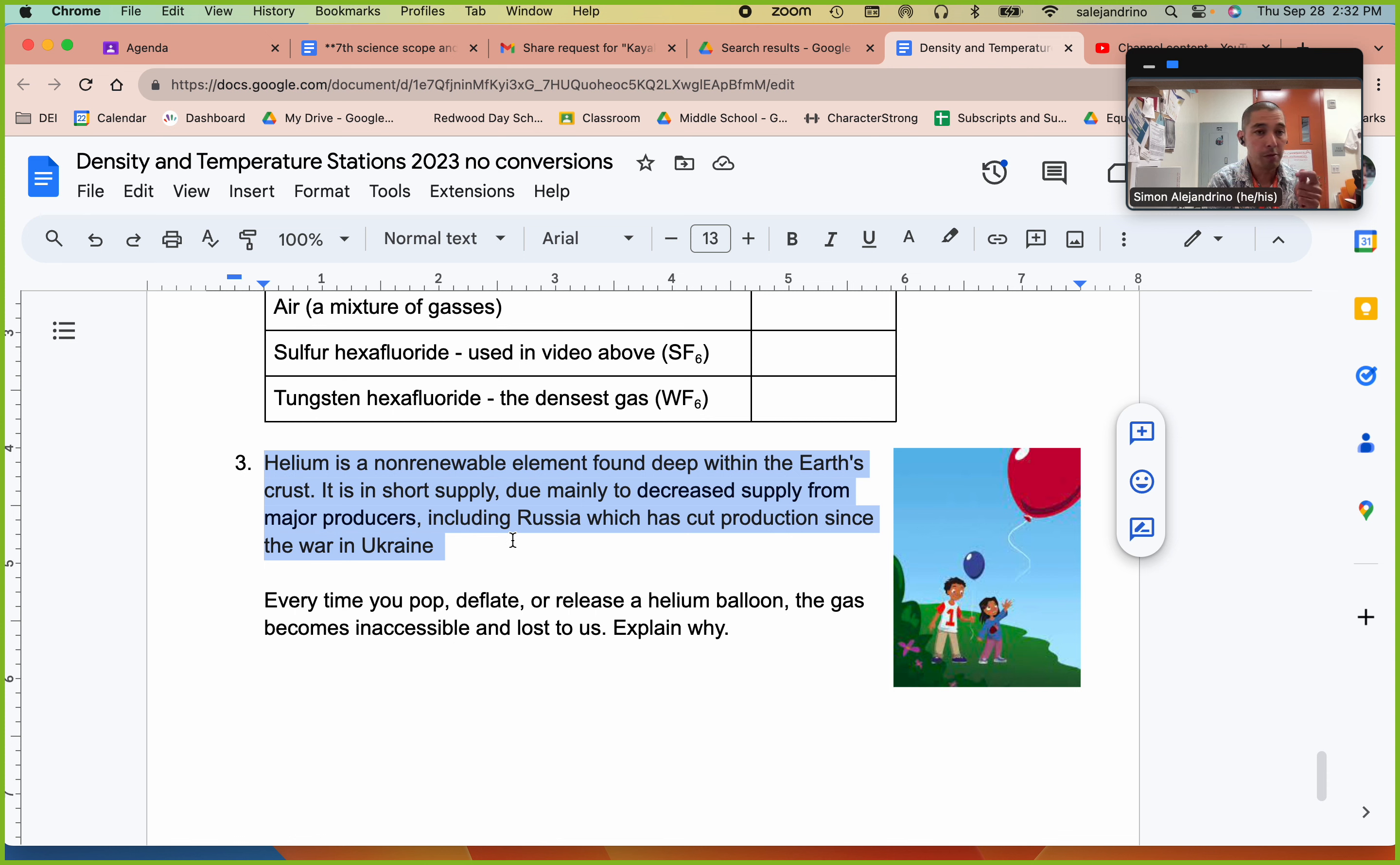Every time you take a balloon and you let it go or you pop it or you deflate it and the helium releases, guess where that helium goes? Straight up because it's less dense than the air around it. So surrounding the earth in the atmosphere, there is kind of a layer of helium that we have released and we can't get it back because it's up there. So that's why over time helium is becoming more and more scarce and it's getting more and more expensive to buy balloons for your party.